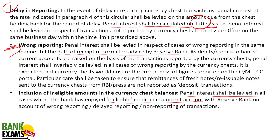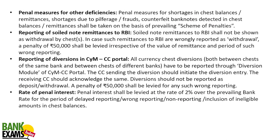So there are three cases where penal interest is levied: first, delay in reporting; second, wrong reporting; third, inclusion of ineligible amounts in Currency Chest balance. The rate of penal interest is 2% above the prevailing bank rate.